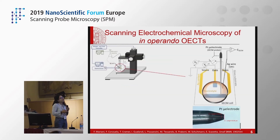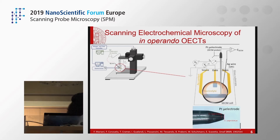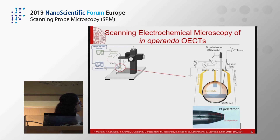The geometry of the OECT was designed to fit the SECM cell. We have a polymeric gate electrode placed in the middle of a U-shaped channel also made of PEDOT:PSS. The profile of the SECM cell defines the portion of the device exposed to an electrolyte solution — a phosphate buffer solution — in which the SECM probe and quasi-reference electrode are also immersed.